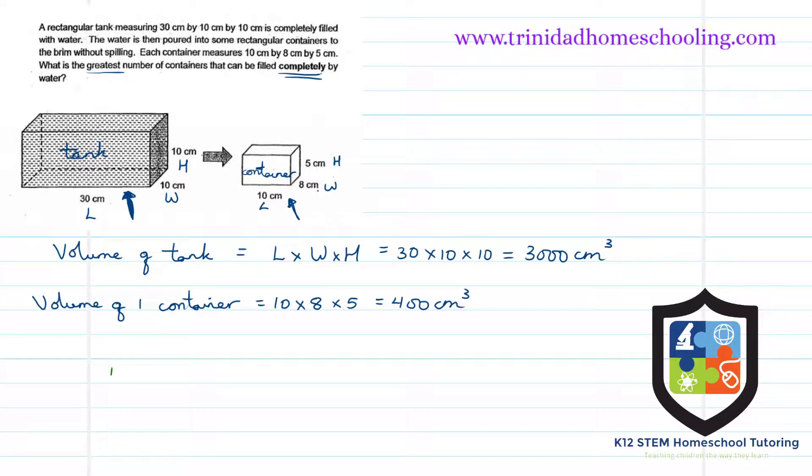The number of containers filled will be found by dividing 3,000 by 400. This gives us 7.5 containers. But the question asks for completely filled containers, so the answer is just 7. The number of containers completely filled is 7.